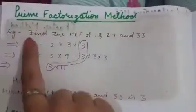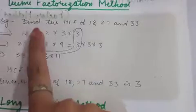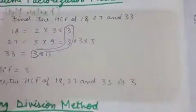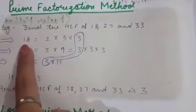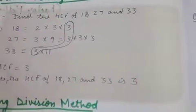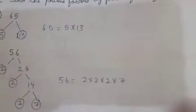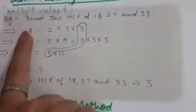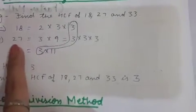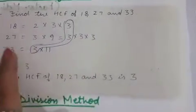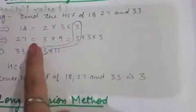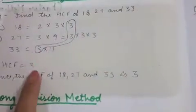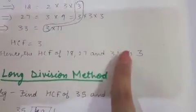The next method to find HCF is prime factorization method. For example, to find HCF of 18, 27, and 33, we write prime factors of each. 18 equals 2 multiply 3 multiply 3. 27 equals 3 multiply 3 multiply 3. 33 equals 3 multiply 11. What is common in all three is 3. In 18's factors, 27's factors, and 33's factors, the common one is 3. Therefore the HCF of 18, 27, and 33 is 3.